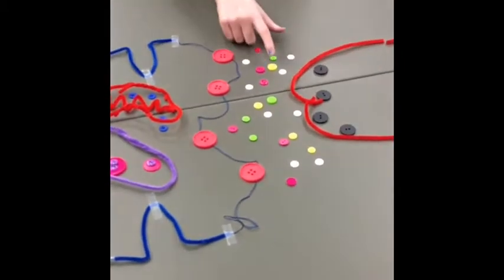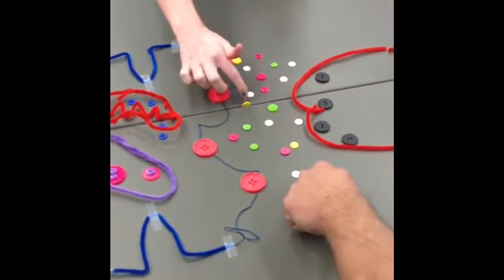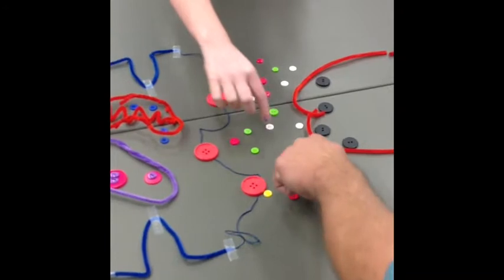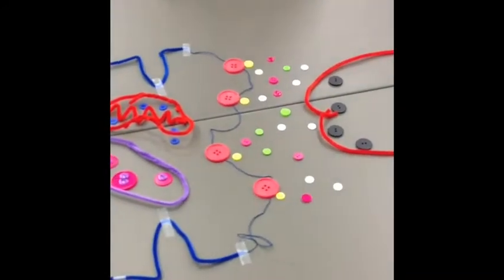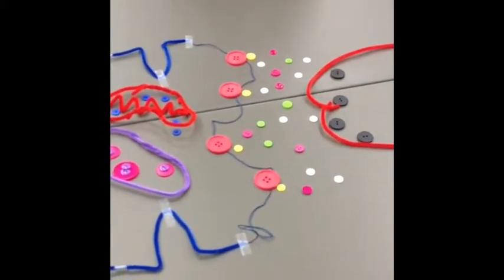Then, the ACH attaches to the receptors, represented by the big red button, on the motor end plate of the skeletal muscle, represented by the blue yarn.